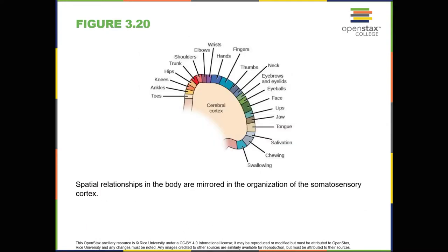The brain's parietal lobe is located immediately behind the frontal lobe and is involved in processing information from the body's senses. It contains the somatosensory cortex, which is essential for processing sensory information from across the body, such as touch, temperature, and pain. The somatosensory cortex is organized topographically, which means that spatial relationships that exist in the body are maintained on the surface of the somatosensory cortex, as shown in figure 3.20. For example, the portion of the cortex that processes sensory information from the hand is adjacent to the portion that processes information from the wrist.